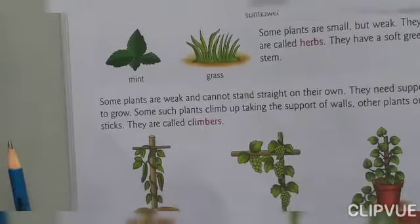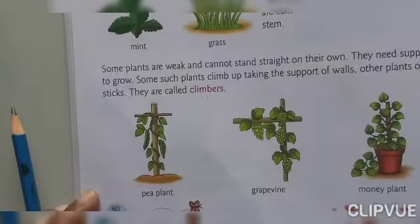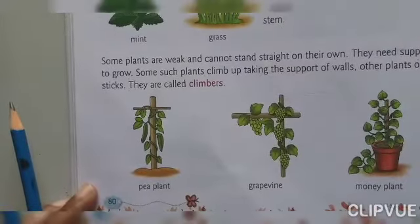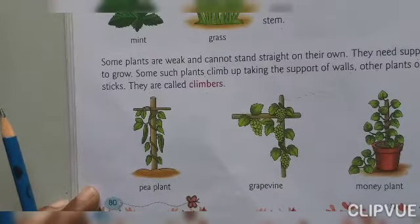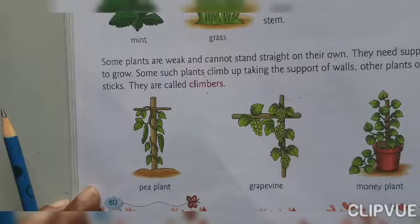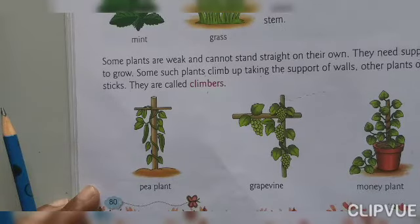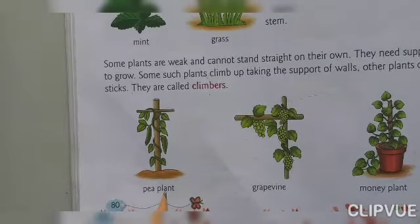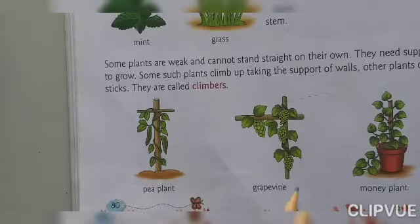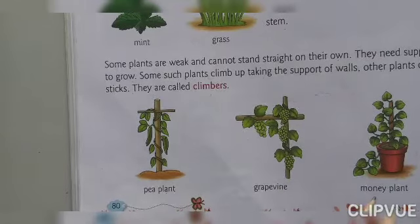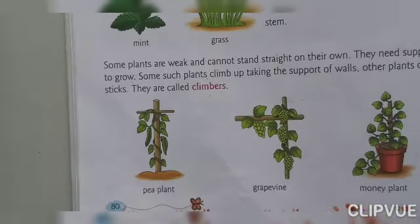Look at this picture, dear students. Pea plant, grapevine, and money plant — they need support to grow. This is the pea plant, grapevine, and money plant.